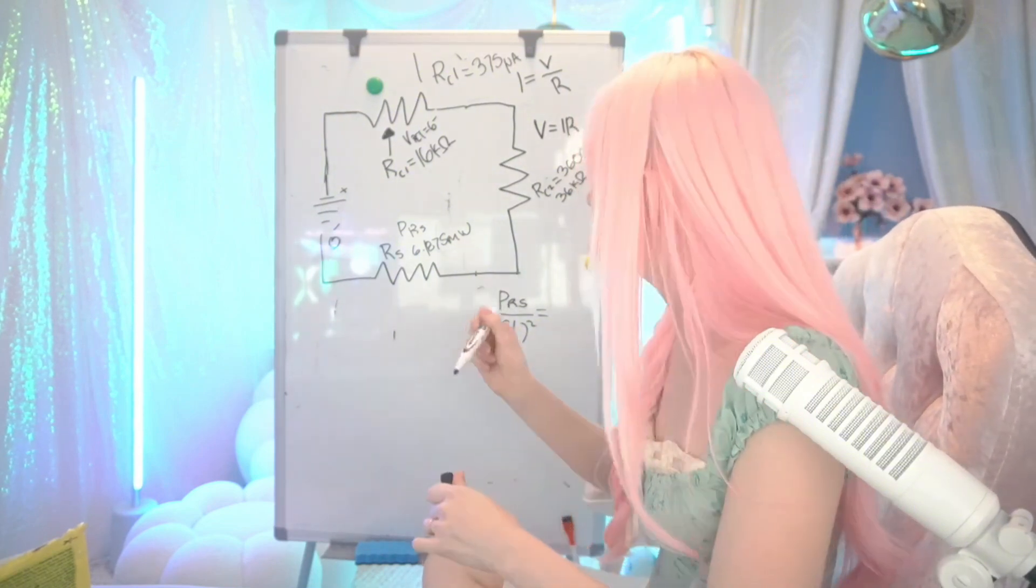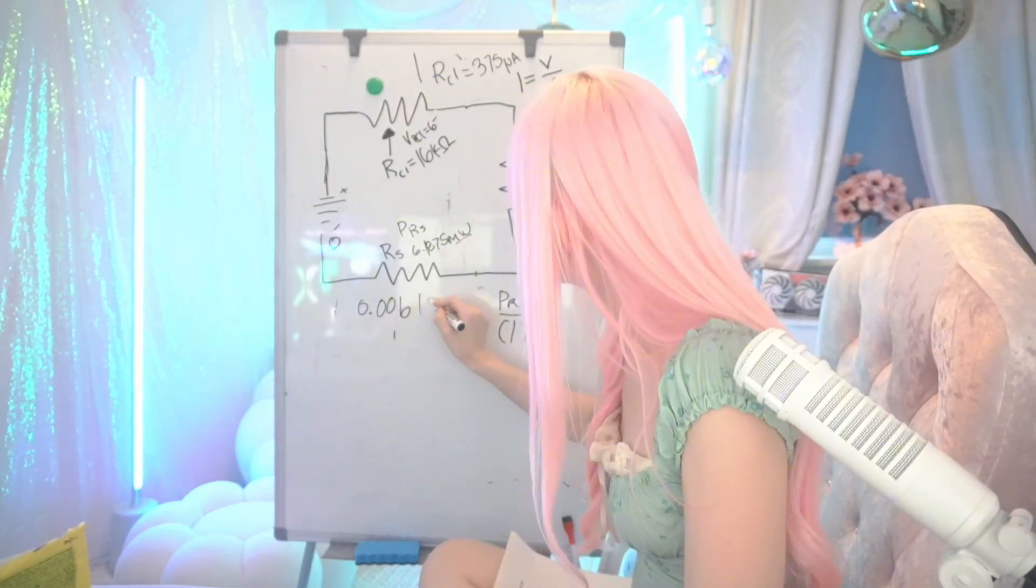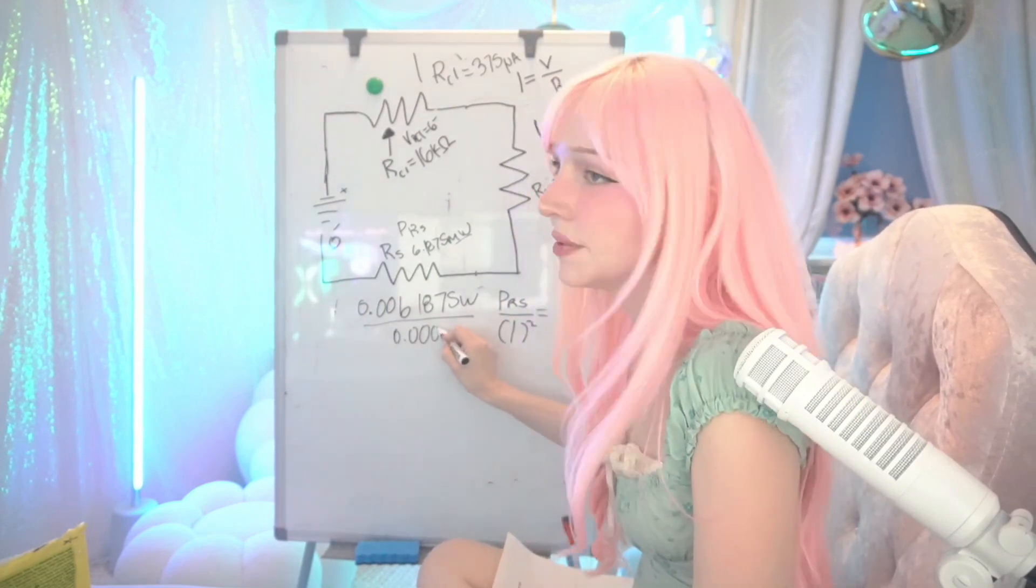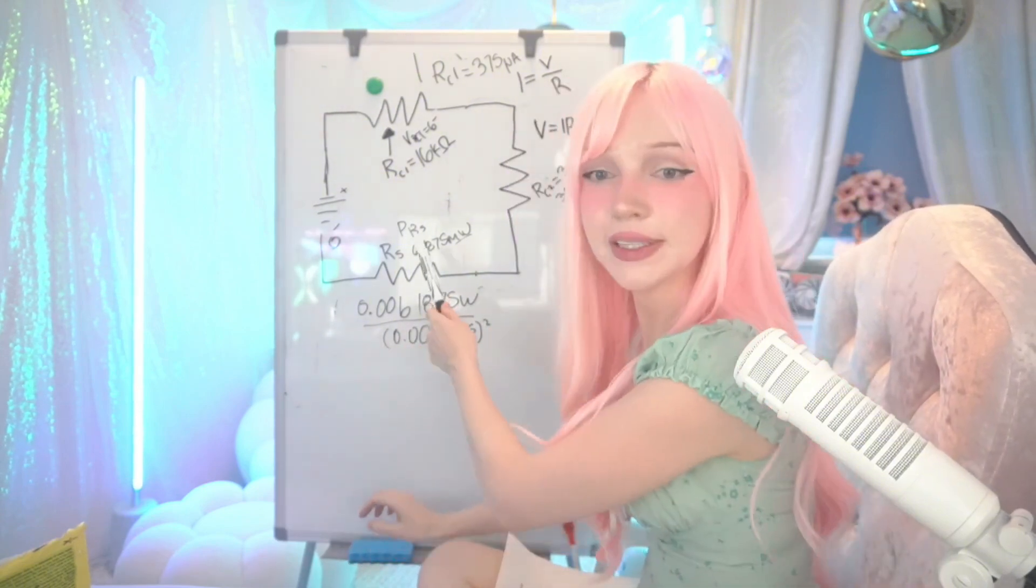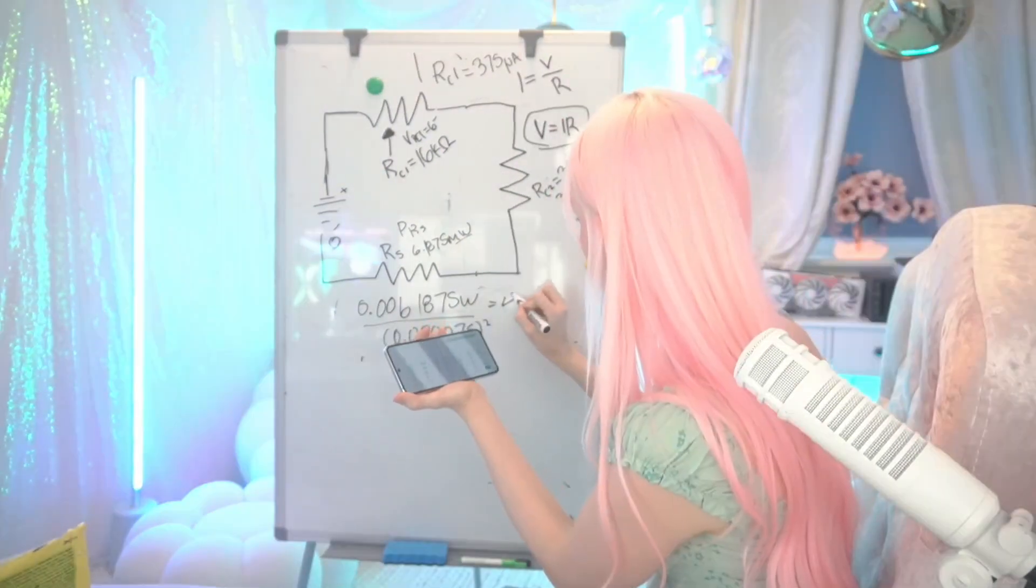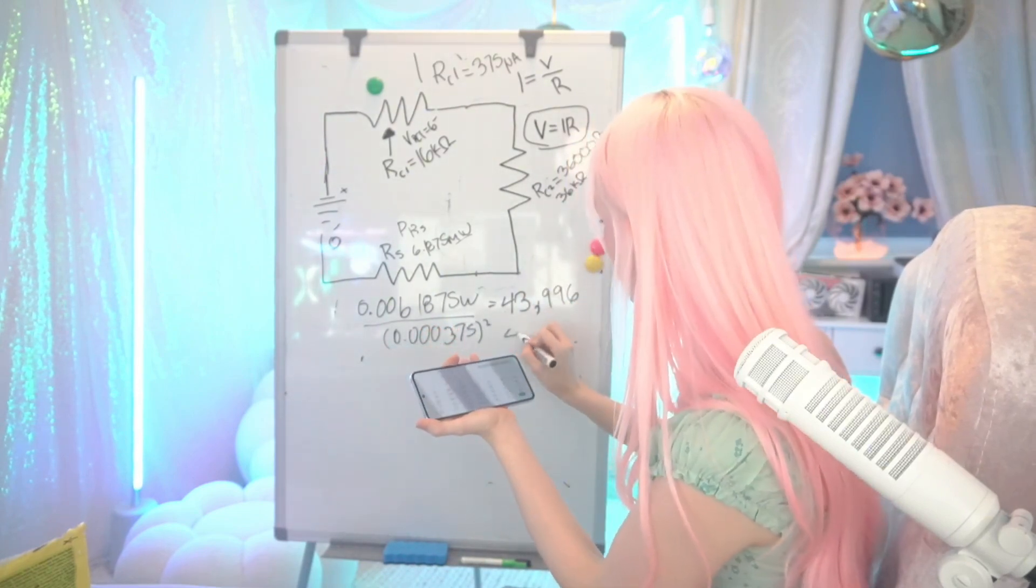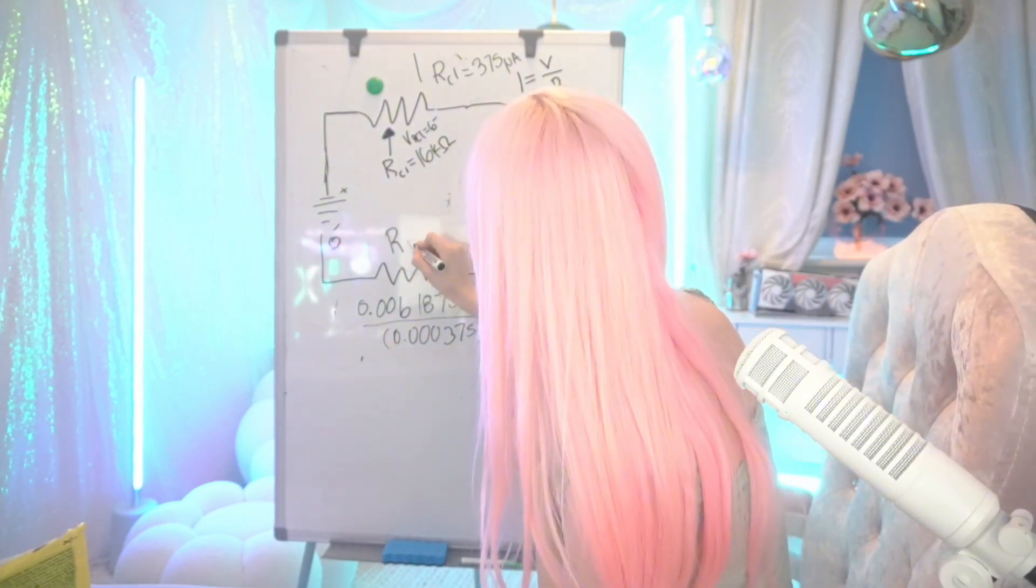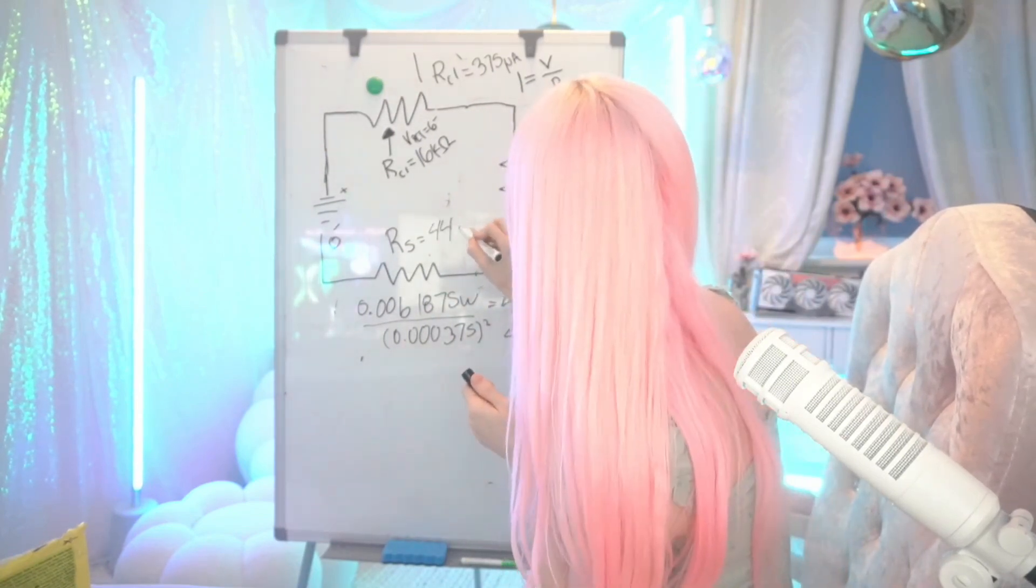We are going to plug in these numbers. I'm going to change the milliwatts to watts. 0.0061875 watts over 0.000375 squared. This equation will give us a resistance value. I'm going to get my phone because I can't do math. Answer is 43996, so we're going to round that up to 44 kilo ohms. So our R5 resistance is equal to 44 kilo ohms.